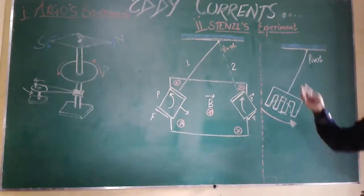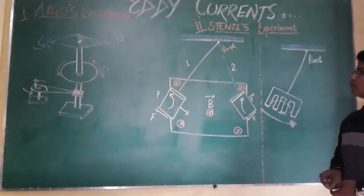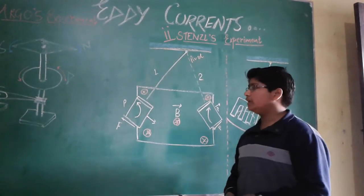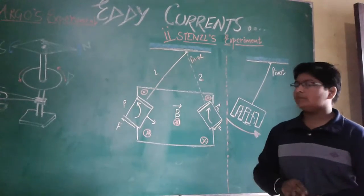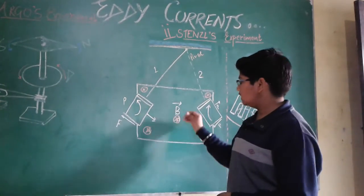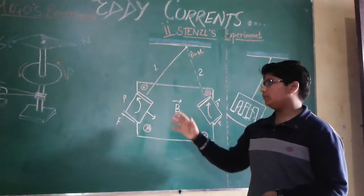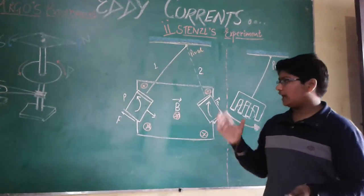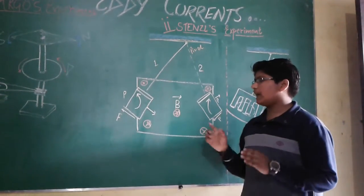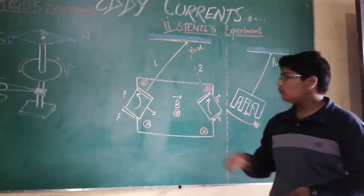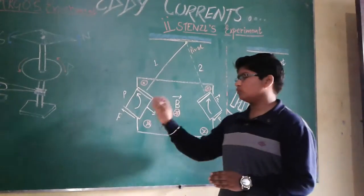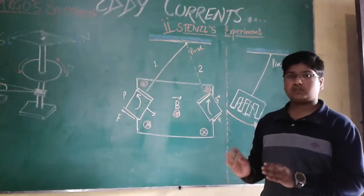Now let's come to the second experiment, the Stenzl experiment. Here we have taken a metallic plate P — it is a conducting plate made of materials like aluminium, copper, etc. The main point is that this metallic plate should be conducting. The magnetic field B is directed inwards and always acts perpendicular to the plane of paper. When this metallic plate enters the magnetic field, a retarding force opposes its motion.